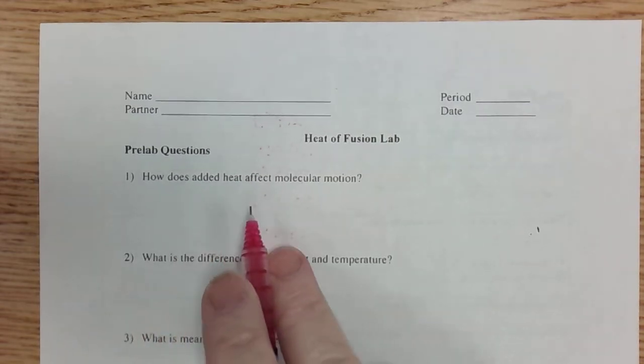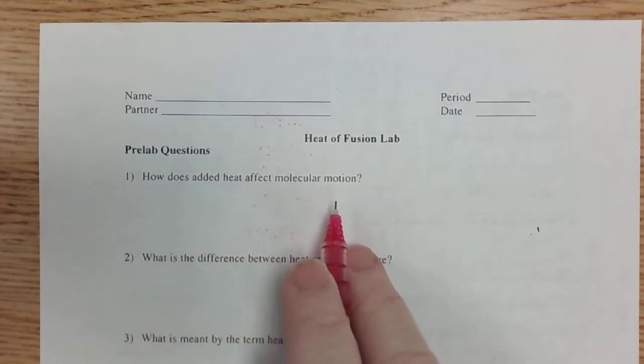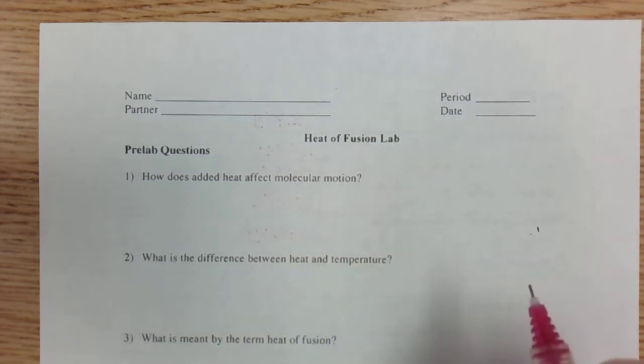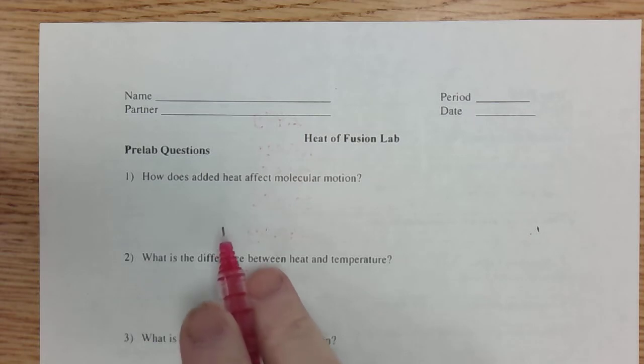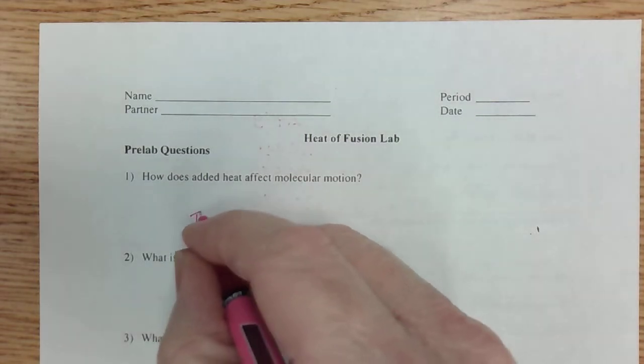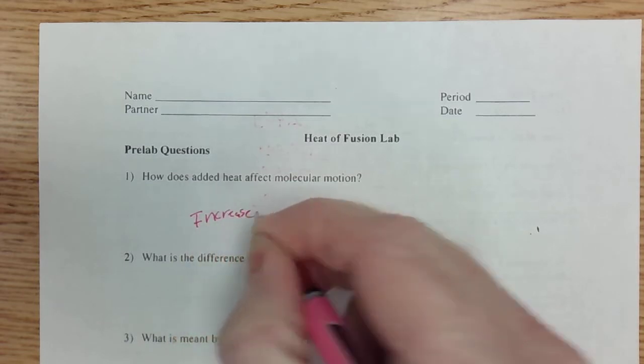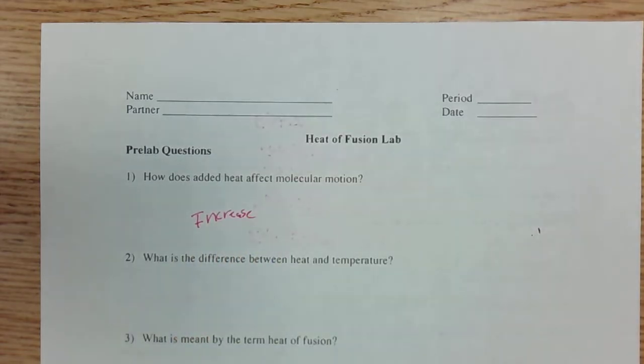How does added heat affect molecular motion? And I think we've been through this one enough in several chapters to get the idea. Anytime you add heat to an object you are going to increase molecular motion. The particles are going to be moving faster.